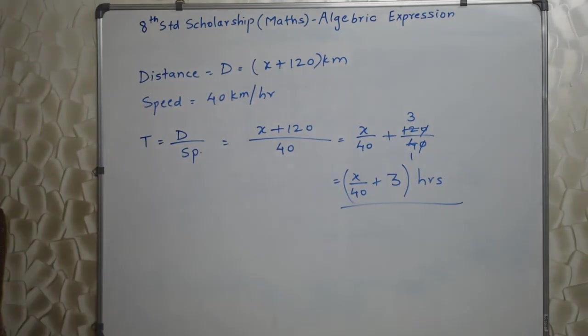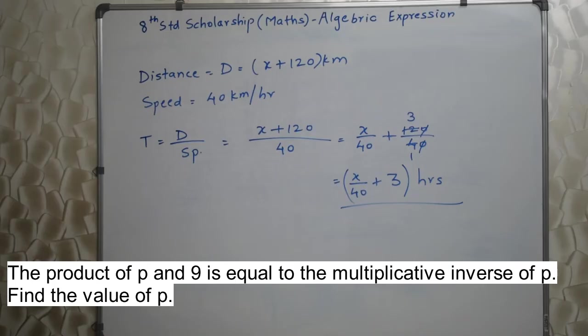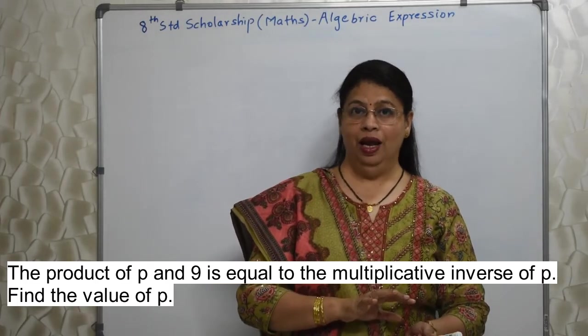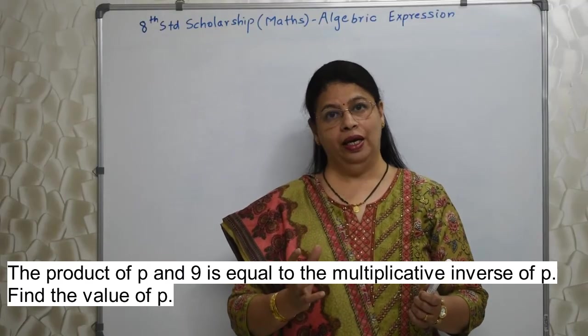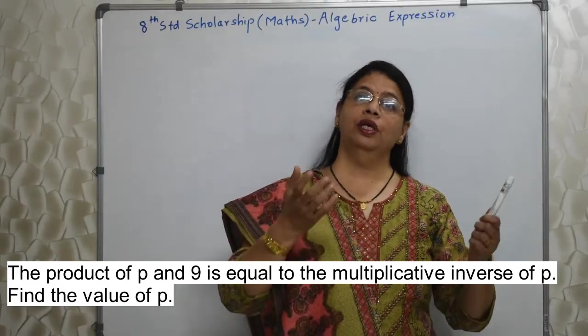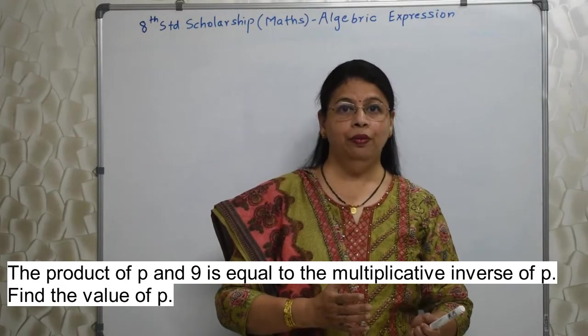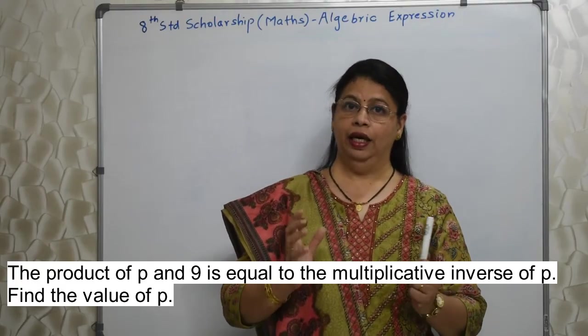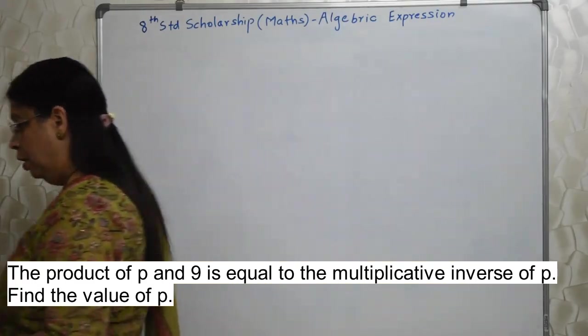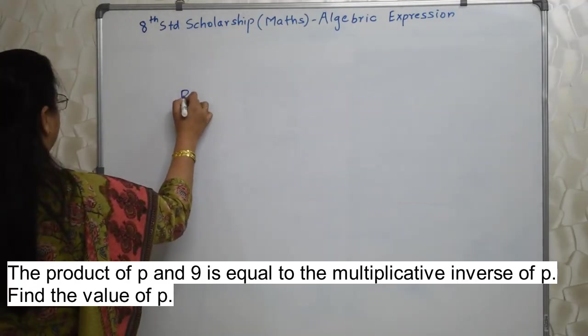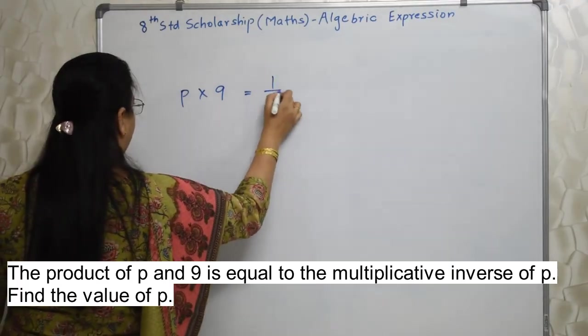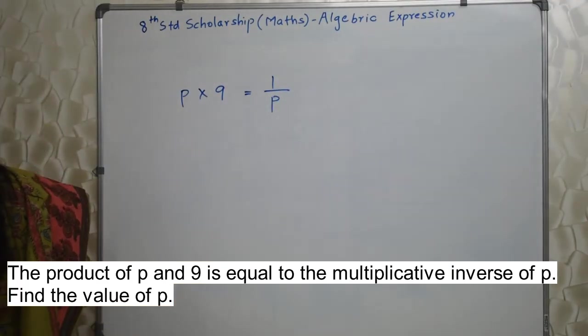Next sum will appear on your screen. The product of p and 9 is equal to the multiplicative inverse of p, find the value of p. Students see here you are supposed to know additive inverse, multiplicative inverse and so on. See how all the topics are interrelated. See we are using knowledge of indices, we are using knowledge of identities, we are using this speed and time concept, now here we are using multiplicative inverse. So all these topics of maths are interrelated. Read the sum properly. The product of p and 9, this is p times 9, is equal to multiplicative inverse of p that is 1 upon p. Isn't it?